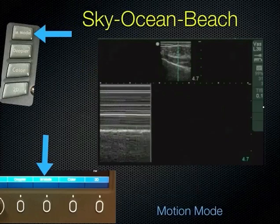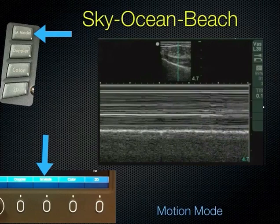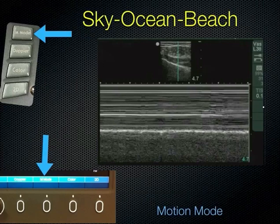Moving on to M-mode: if you put an M-mode line through the pleural interface and watch it over time, you get an image called 'sky ocean beach,' also referred to as the seashore sign. The soft tissue creates a striped appearance in the sky. The pleural line is bright white — like where the ocean meets the land. If the lung is sliding underneath, you get a grainy effect due to the motion, which is the beach. That graininess means the lung is moving — sky ocean beach is normal.